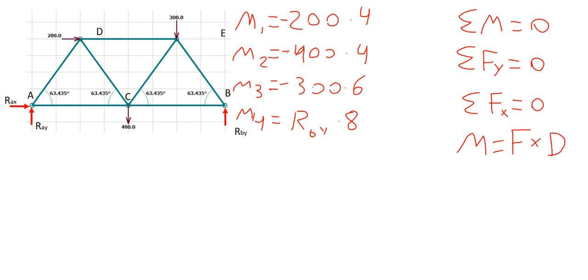As we simplify each one of these moments, moment 1 will have a value of negative 800. Moment 2 will have a value of negative 1,600. Moment 3 will have a value of negative 1,800. And moment 4 will have a value of RBY times 8.